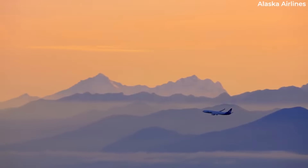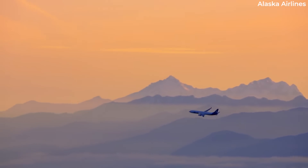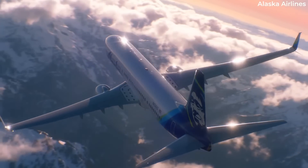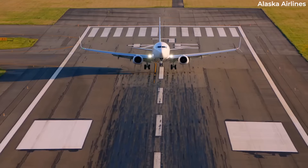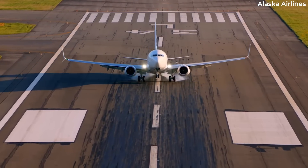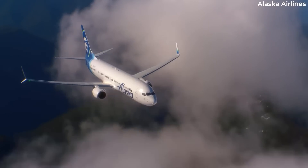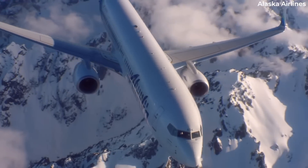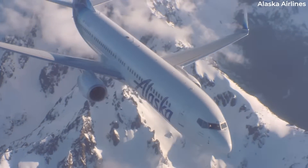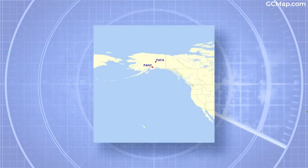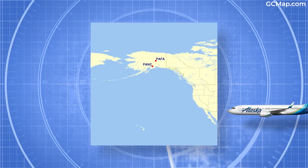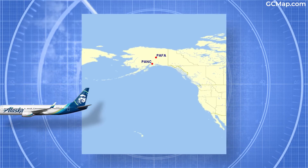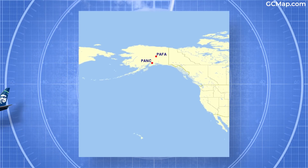Alaskan airports are instead given the prefix PA. The IATA code for Anchorage is ANC and for Fairbanks it's FAI. Their equivalent ICAO codes are PANC and PAFA.